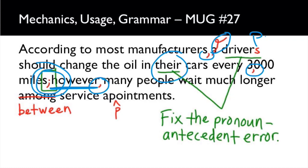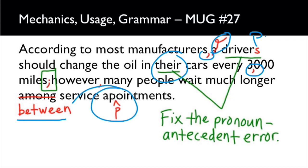However, comma, many people wait much longer. 'Among' should be 'between' — 'among' is for three or more, like among a group of friends, but 'between' is for two. Also, 'service appointments' was misspelled, so make sure you fix that one.